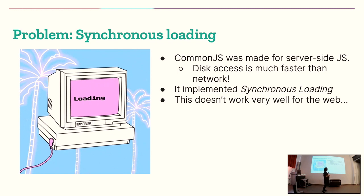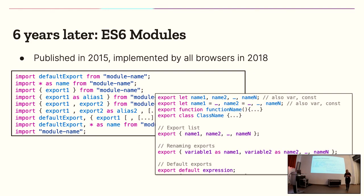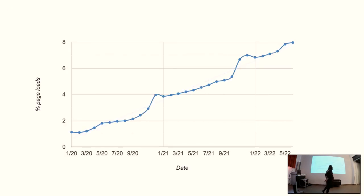There were several attempts to fix synchronous loading — one of the most well-known was the AMD system, which took a lot of what CommonJS is but made it asynchronous. Six years after the blog post was published, TC39 finally standardized the ES6 module system. You'll recognize it by its import-export syntax and a couple of other special behaviors that module files have. Everyone was very happy, and here's a graph of module usage on the web going up and to the right.